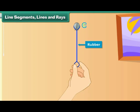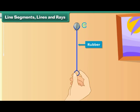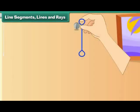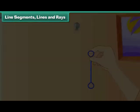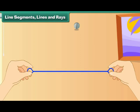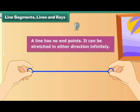Let us stretch it — first a little, then a little more, and then some more. What we get is a ray. A ray has only one end point. It can be stretched in the opposite direction infinitely. Let us now remove the nail and stretch the rubber in the other direction. We now have a line. A line has no end points.